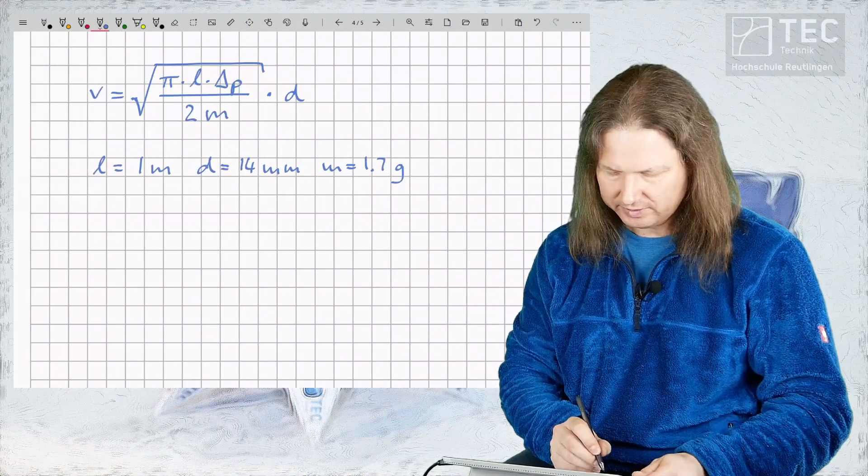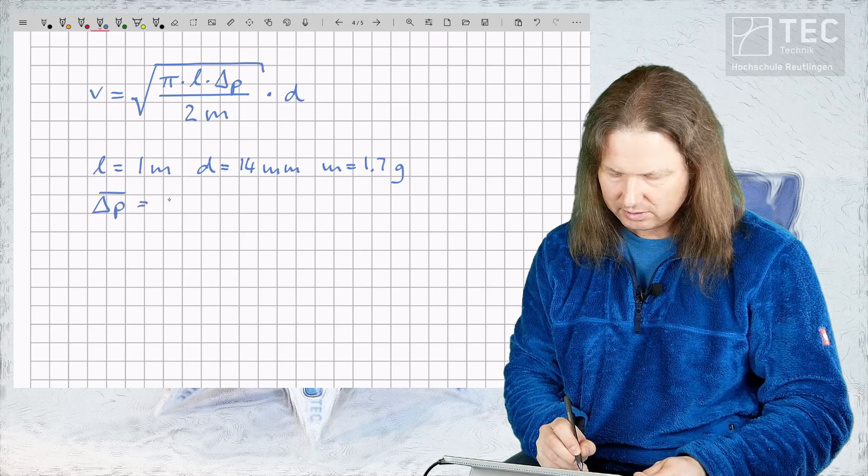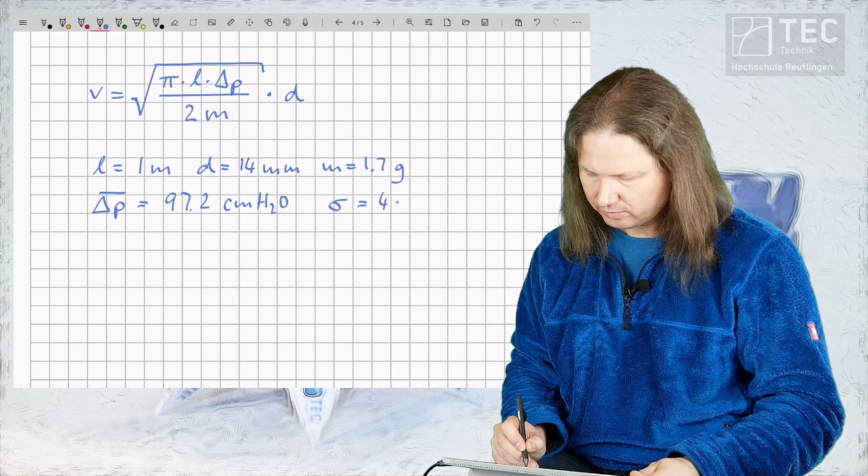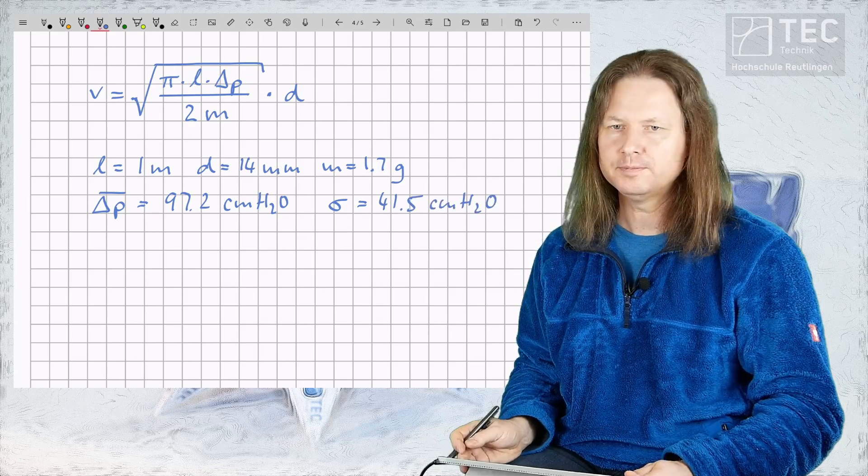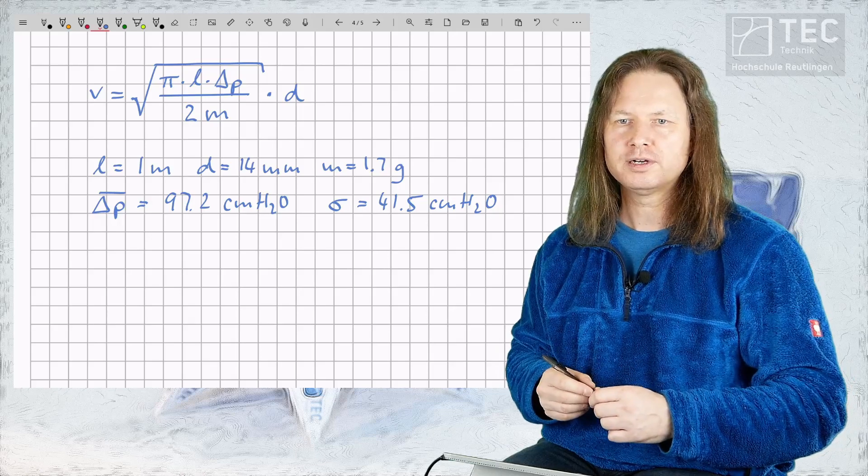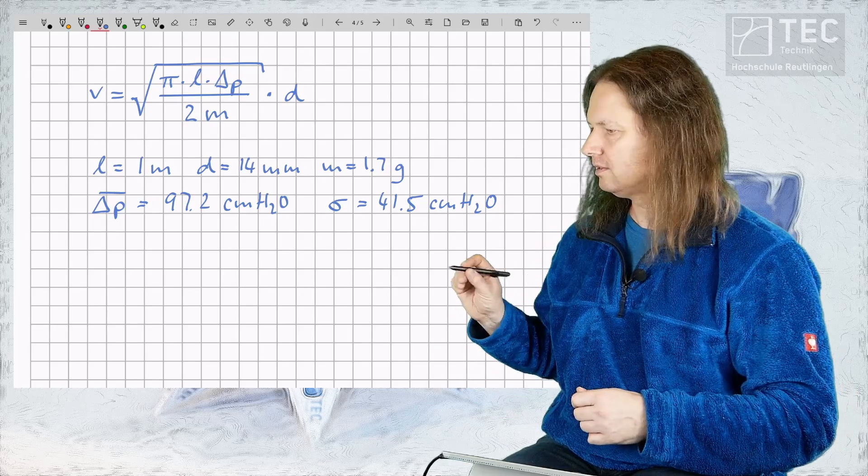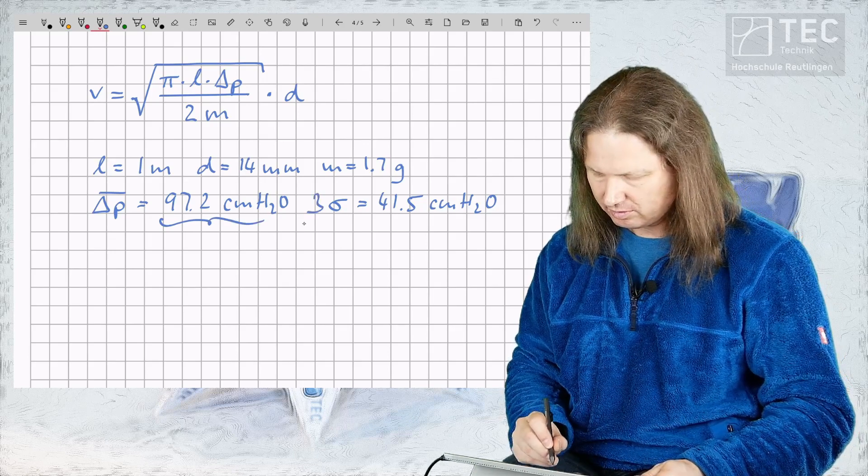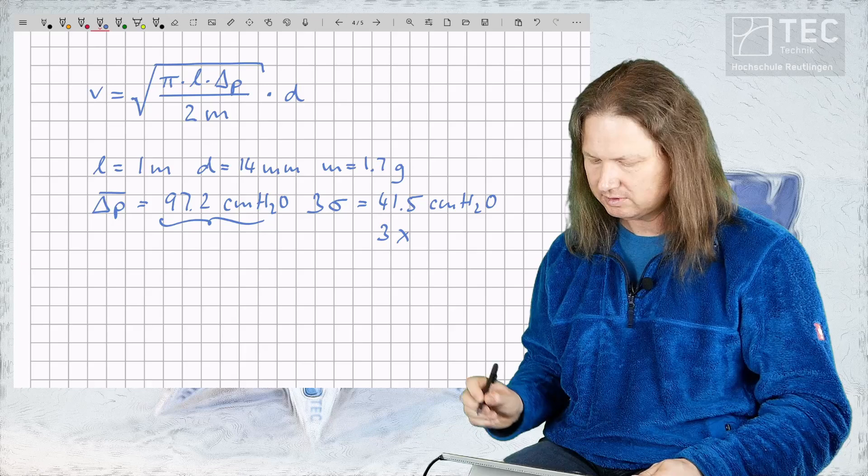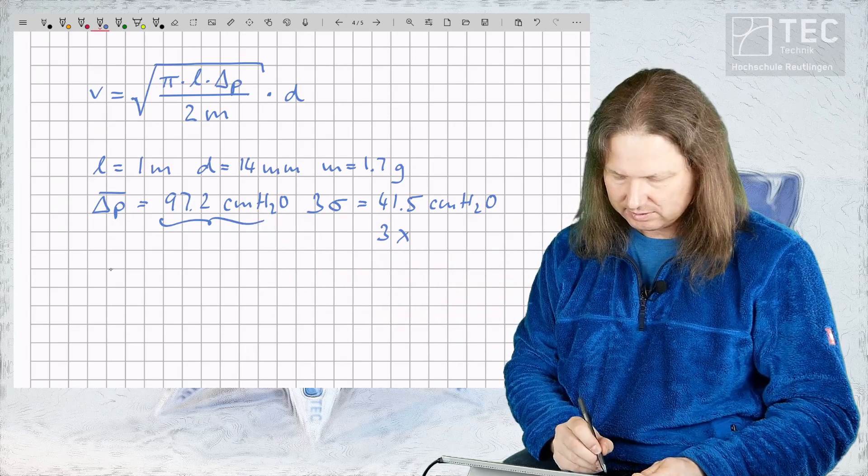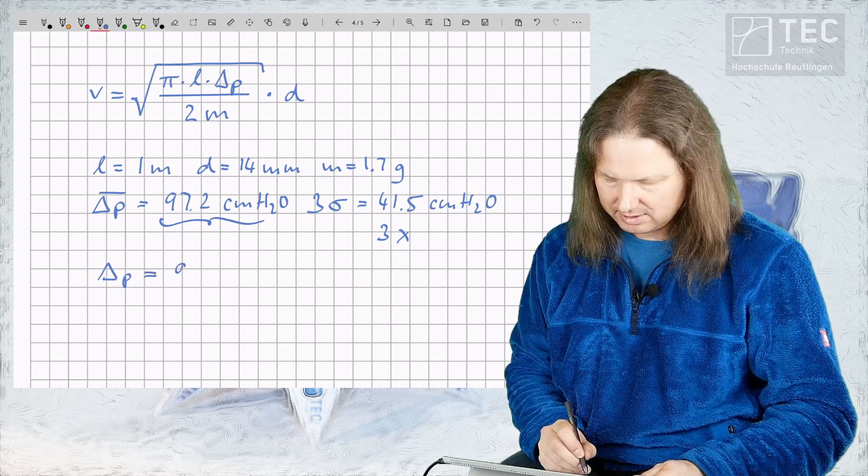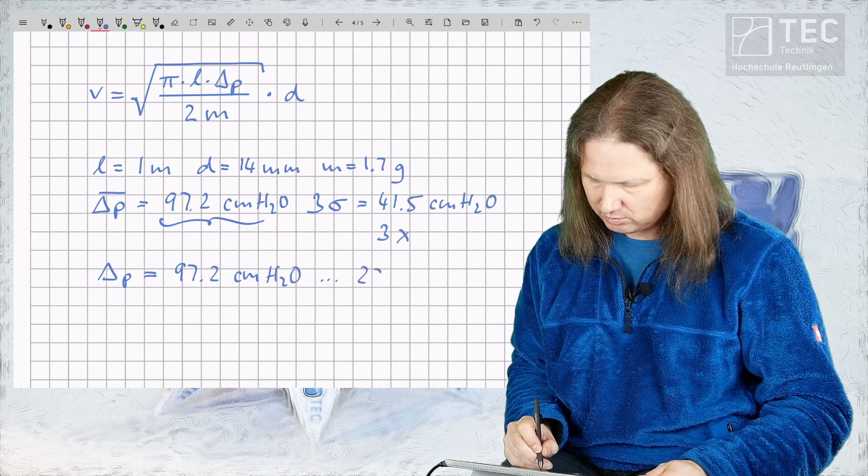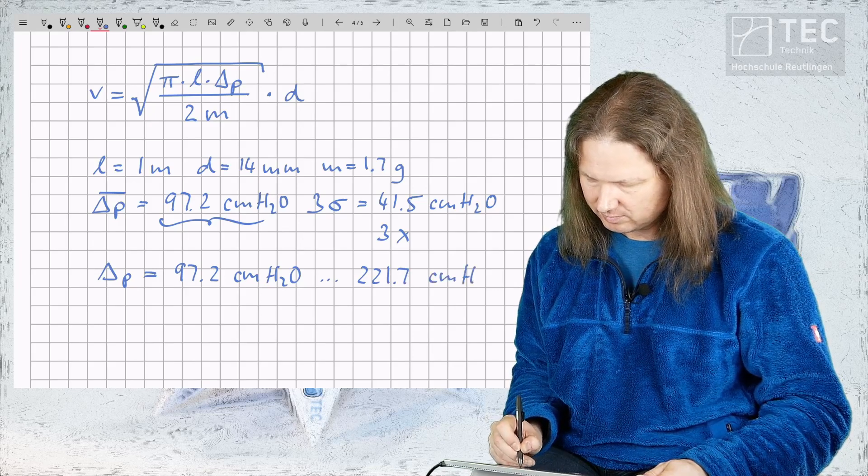Let's use this data. We have an average expiratory pressure of 97.2 centimeters water column and a standard deviation of 41.5 centimeters water column. As an experienced blow gunner I guess that my lung pressure is more on the high side. So let's assume that the lung pressure I can put into the end of the tube is somewhere in between this average value and three sigma. So we need to take three times 41.5 on top of the average value which will give us delta p ranging from 97.2 centimeters water column up to 221.7 centimeters water column.